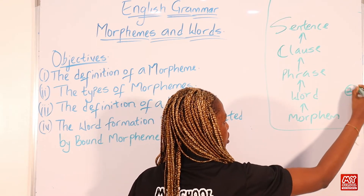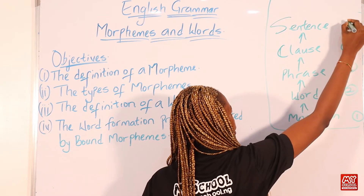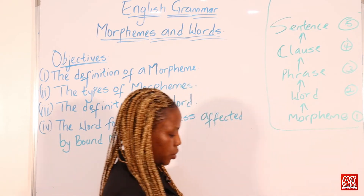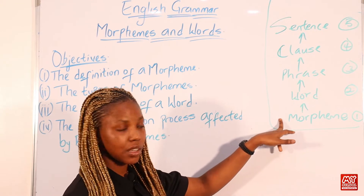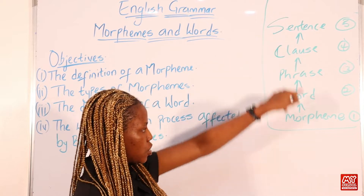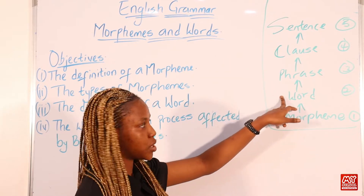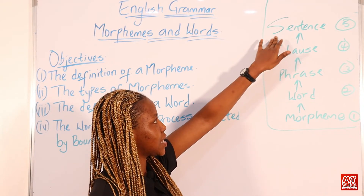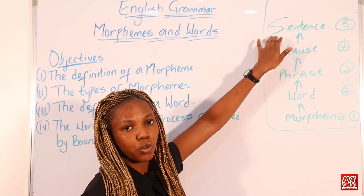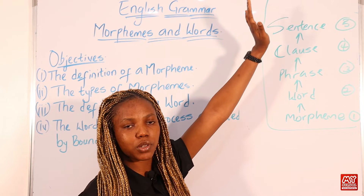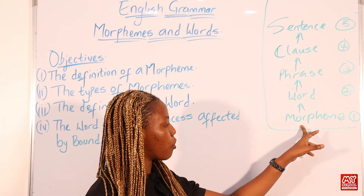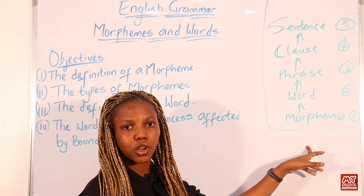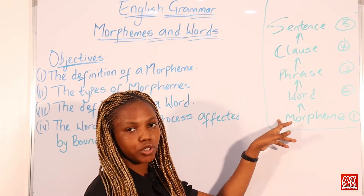So this is number one, number two, number three, number four, and number five. In ascending order, morpheme is the least and then it grows to sentence, which is the highest. Morpheme will make the word, words will make phrase, phrases will make a clause, and clauses will make sentence. After sentence, several sentences put together will make what we call discourse — that is speech or writing. Now before morpheme, we have phonology, which looks at speech sound. But because we are looking at grammar, morpheme is the least on the grammatical hierarchy.